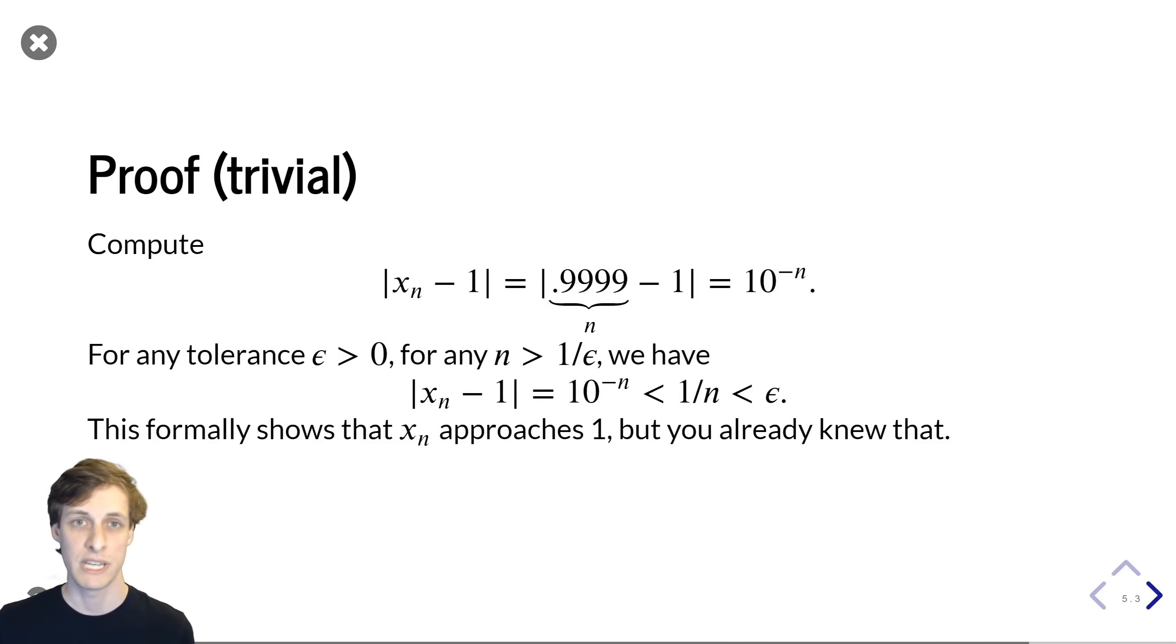But I did say that I will give a real proof, so here it is. All we have to show is that that sequence of 0.9999 approximations is getting closer and closer to 1.